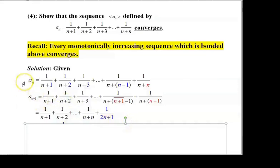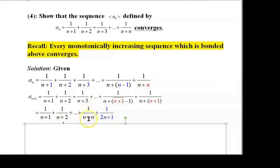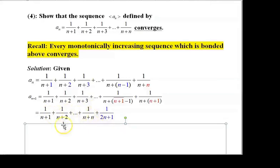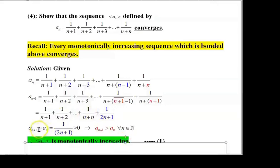It is clear that aₙ starts with 1/(n+1) and the last term is 1/(n+n), whereas aₙ₊₁ starts with 1/(n+1) and ends with 1/(2n+1). The last but one term of aₙ₊₁ is 1/(n+n), which is the whole of aₙ. Hence, aₙ₊₁ minus aₙ = 1/(2n+1).